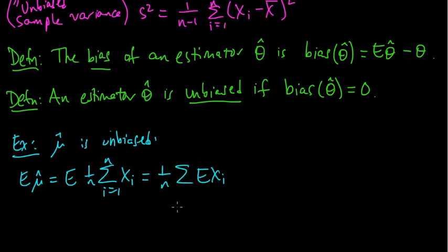Each of them has mean mu, right? They're identically distributed. So that means this is mu for each of these. And this is a sum from 1 to n, so that's just n mu, the n cancels, and we get mu. So that shows that the expected value of mu hat equals mu, and therefore the bias is 0, and therefore it's unbiased.